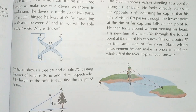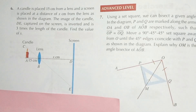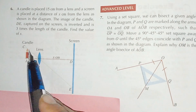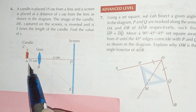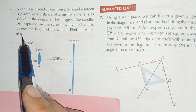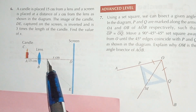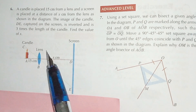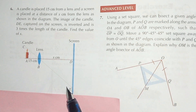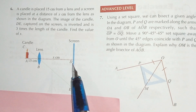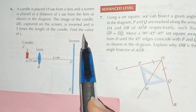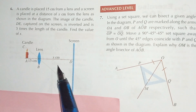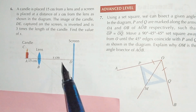Question number six: a candle is placed 15 centimeters from the lens. A screen is placed at a distance of x from the lens. The image of the candle DE, which is captured on the screen, is inverted and is three times the length of the candle. We have to find the value of x.